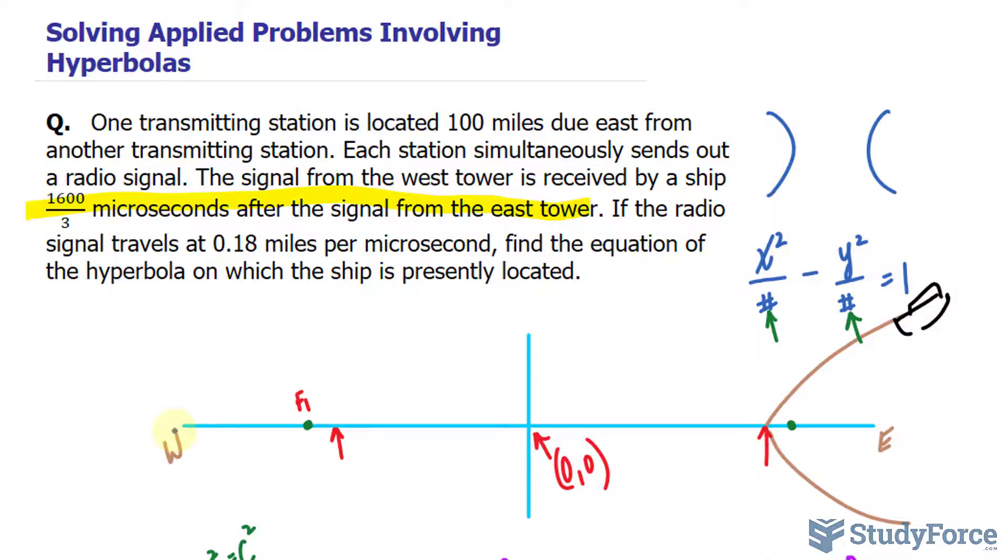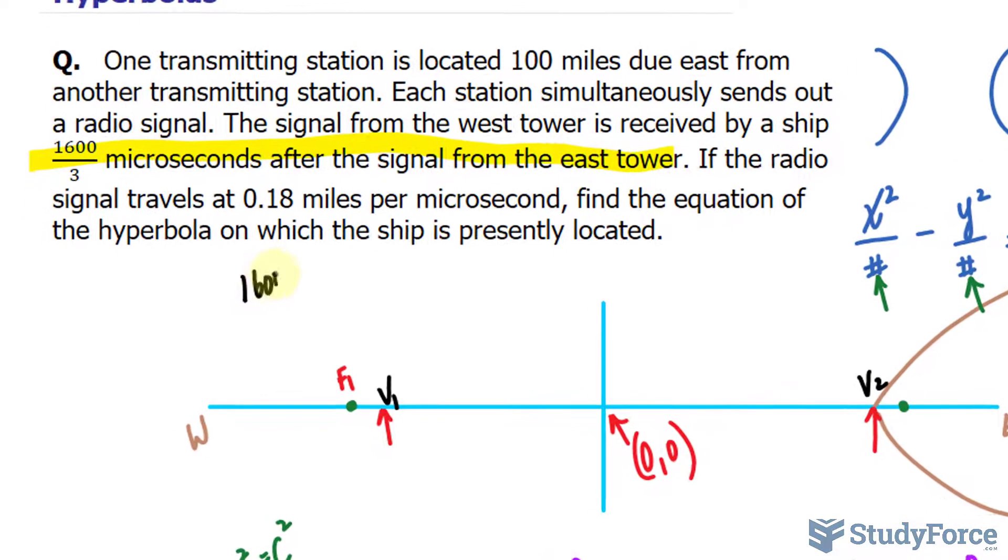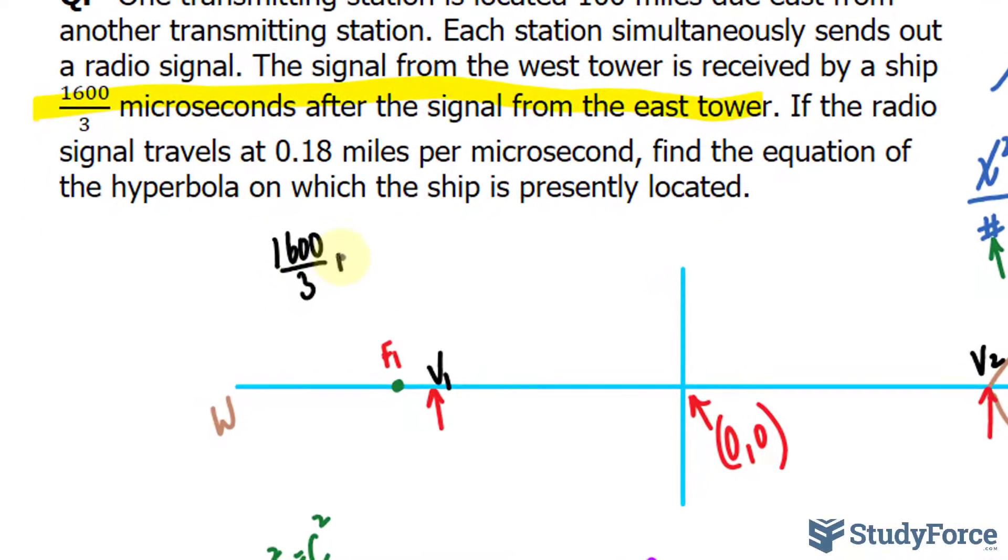If the radio signal travels at 0.18 miles per second, that's actually very important for us because that will tell us the distance between the two vertices, V1 and V2. Here's what I mean. Let me take 1600 over 3 microseconds and use this rate as a conversion factor, where I write down 0.18 miles at the top and at the bottom 1 microsecond.